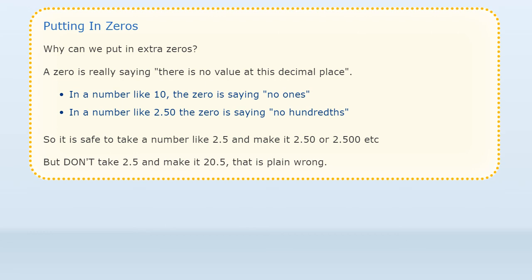So it is safe to take a number like 2.5 and make it 2.50 or 2.500 etc. But don't take 2.5 and make it 20.5, that is plain wrong.